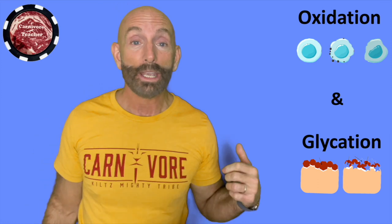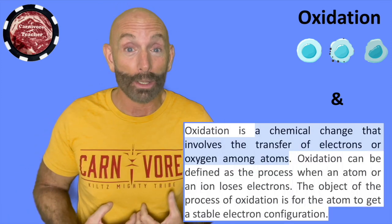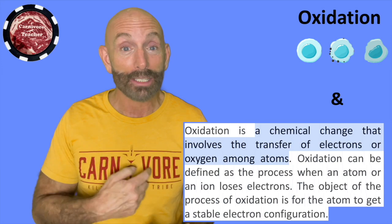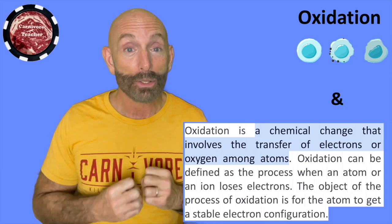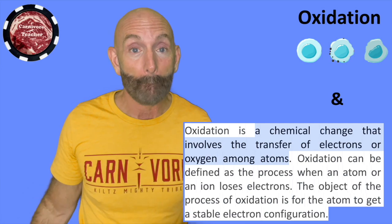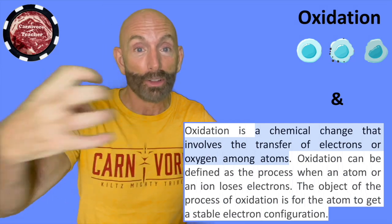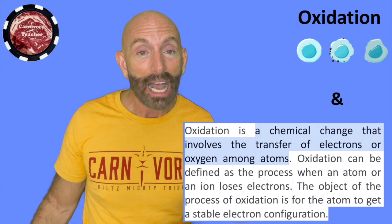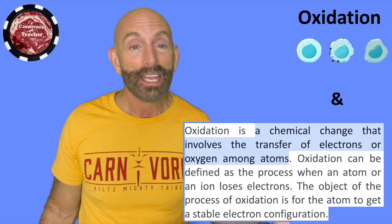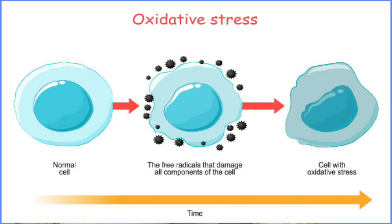Oxidation is when we are taking a substance like seed oils — a chemical reaction is happening so that they are releasing an electron and there's a space left over that it wants to fill. When something is oxidizing, it's almost like rust in the body. When iron rusts, it's losing its electrons and looking for more electrons.